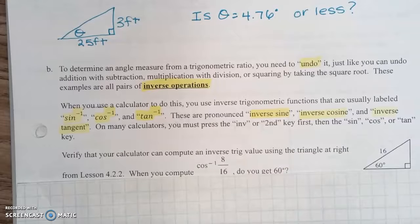So we're going to talk about part B. If you have a highlighter, go ahead and get it going on highlighting some stuff. It says to determine an angle measure from a trigonometric ratio, you need to undo it. Just like you can undo addition with subtraction, multiplication with division, or squaring by taking the square root. These examples are all pairs of inverse operations.